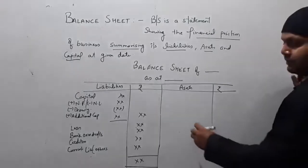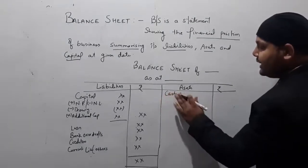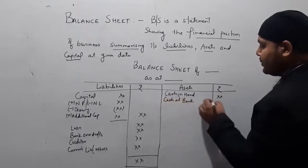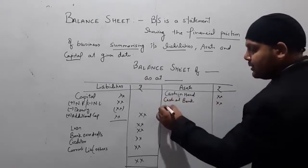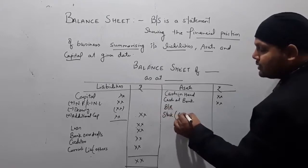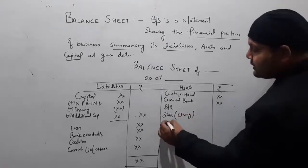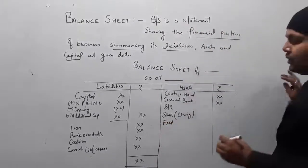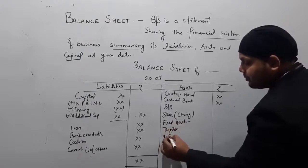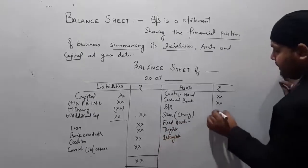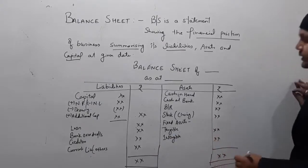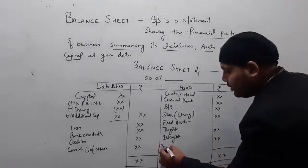On the asset side, we first write down cash in hand and cash at bank, then bills receivable, prepaid expenses, and other current assets like closing stock. Then we list fixed assets — whether tangible such as land and building, or intangible such as patents and copyrights. Investments are also shown on the asset side of the balance sheet. After listing all assets, we total the asset side.